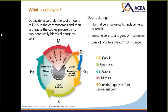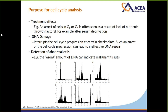Why is it important to do cell cycle analysis? It gives us a basic idea of the effects of certain treatments, such as arrest of cells in the G0 or G1 phase. It can also indicate whether there is DNA damage, and in a clinical situation, it allows us to detect abnormal cells. The histograms shown here illustrate a normal healthy cell versus histograms from malignant tissues, which we'll discuss further in a later slide.